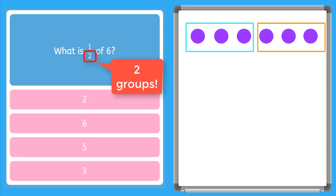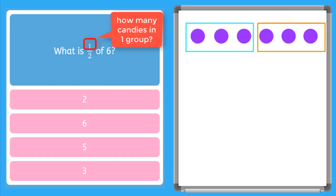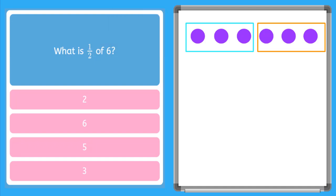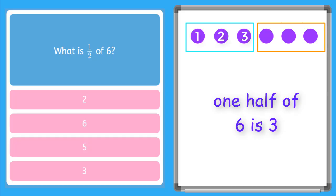And if I look at my fraction again, I see a one on the top. So I'm only interested in how many candies are in one group. If I look at just one group and count my candies, I see one, two, three. So this tells me that one half of six is three.